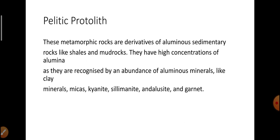Pelitic rocks: These metamorphic rocks are derivatives of aluminous sedimentary rocks. Pelitic rocks high aluminous — high aluminium-rich rocks होती हैं. यह sedimentary rocks जैसे shale और mudstone से बनती हैं. They have a high concentration of alumina, as recognized by the abundance of aluminous minerals like clay minerals, mica, kyanite, sillimanite, andalusite, and garnet.